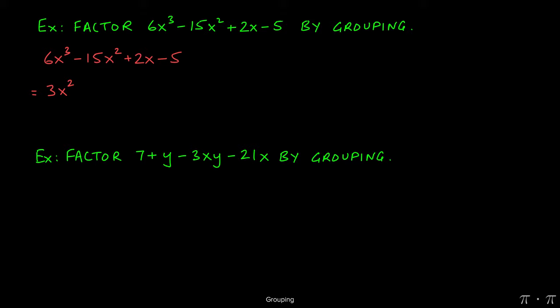For the first two terms, we observe that the GCF is 3x squared. We determine what goes inside the parentheses by dividing the two terms by 3x squared. 6x cubed divided by 3x squared gives us 2x. Negative 15x squared divided by 3x squared gives us negative 5.